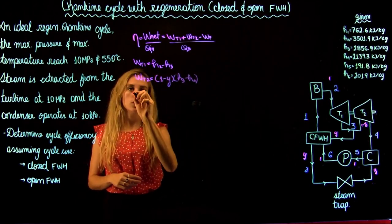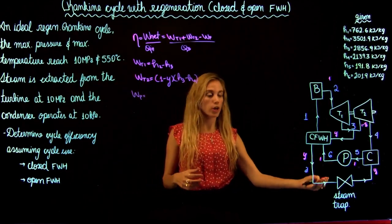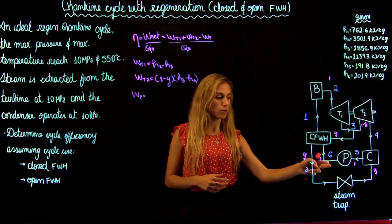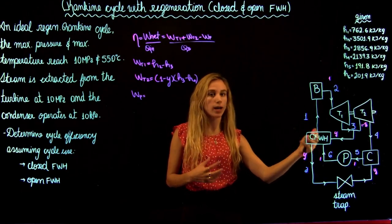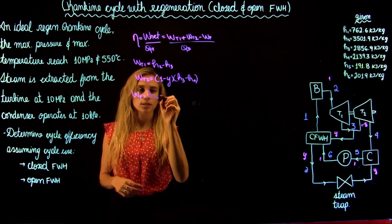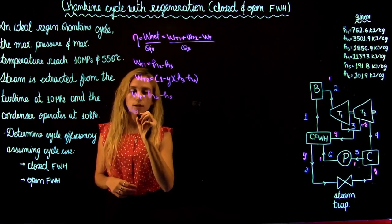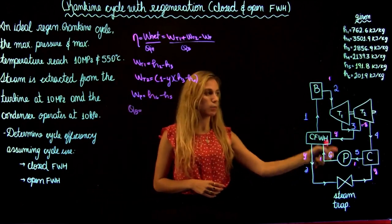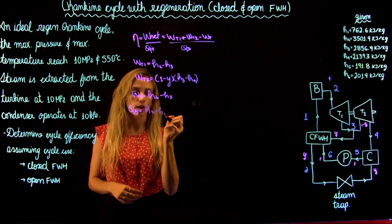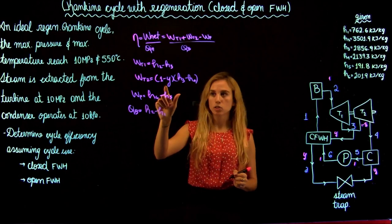Then the work of the pump: we are inputting energy to compress the fluid, so at state 6 we have higher energy than state 5, giving H6 minus H5. The heat at the boiler, using the same concept, is going to be H2 minus H1. We have all the enthalpies for all the states but we still need to find the mass fraction Y.